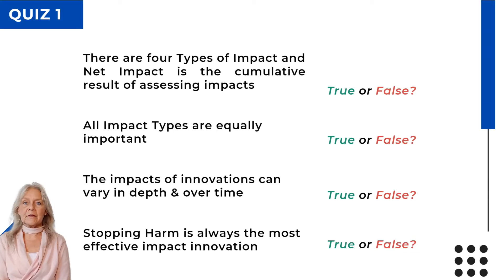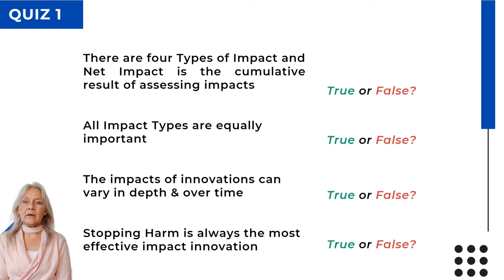Question: there are four types of impact — net impact is the result of assessing and adding up impacts. True: net impact assesses the sum, quality, and quantity of positive and negative impacts. Question: all impact types are equally important. False: negative impact can have deadly consequences, so net impact is the most important. Question: the impacts of innovations can vary in depth and over time — monitoring effects is crucial, especially negative scaling effects. True — if all circumstances remain the same, but they never do. Plus there is the butterfly effect of small events having big effects. Question: stopping harm is always the most effective impact innovation. False — that's highly likely, but it may create even worse negative impacts. Making something illegal fuels crime.